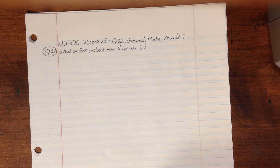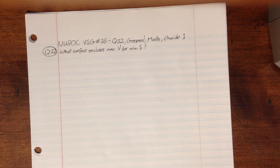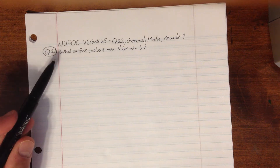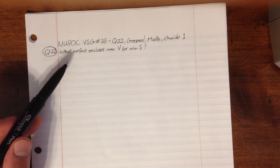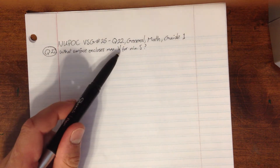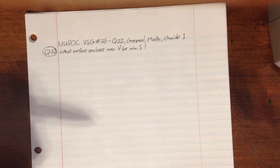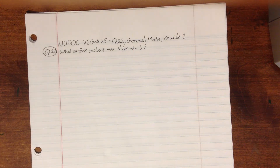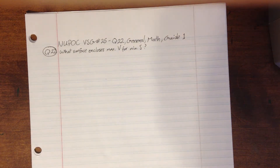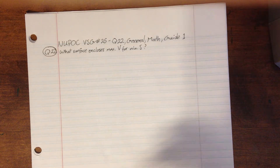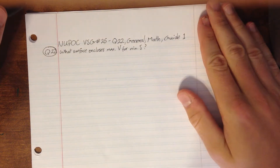Welcome to the NUPAC video study guide number 26. We're going to look at the last question in the general math section of guide 1, which is question 22: What surface encloses the maximum volume for a minimum surface area? I'm sure a lot of you already have the intuition that this is going to be a sphere, but let's look at some ways that we can show that.